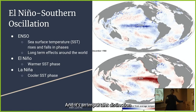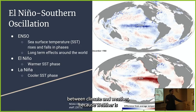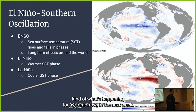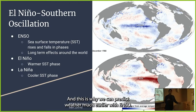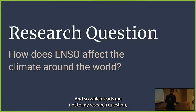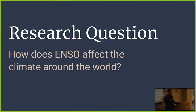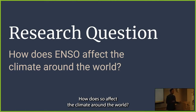It's an important distinction between climate and weather: weather is what's happening today, tomorrow, and the next week, while climate is what's happening over a longer period — weeks and months. This is why we can predict weather much earlier with ENSO, which leads me to my research question: how does ENSO affect the climate around the world?